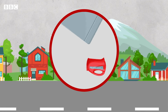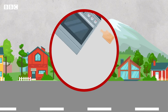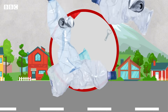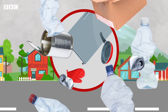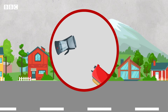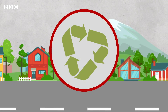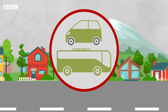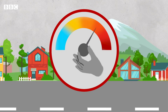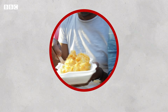The stuff you use at home also adds to the problem. All that plastic, metal and cardboard takes a lot of energy to produce and dispose of. So recycling can help reduce your carbon footprint, but not as much as how you travel or heat and cool your home.